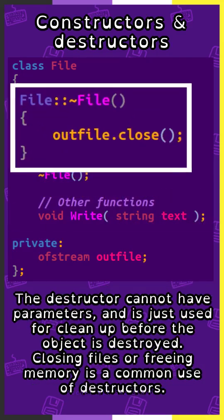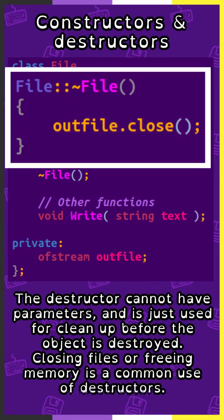The destructor cannot have parameters and is just used for cleanup before the object is destroyed. Closing files or freeing memory is a common use of destructors.